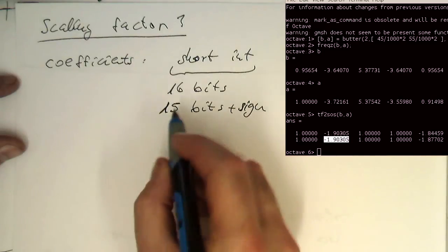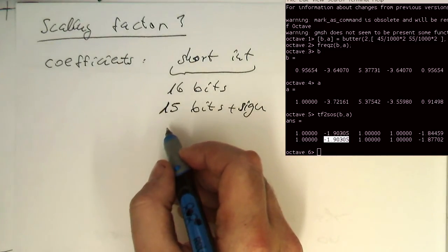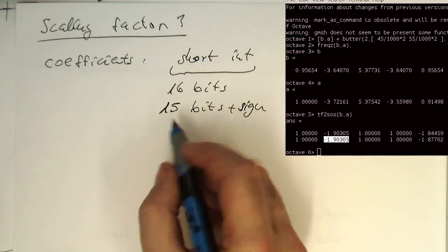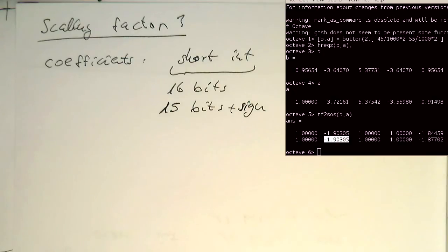So what we want to have is we want to scale up our coefficients to these 15 bits. Let's look at our numbers what we have here. We see that the coefficients, the highest coefficients, go roughly up to 2.